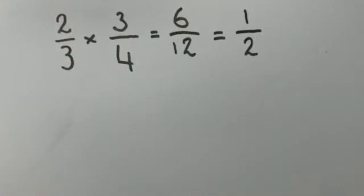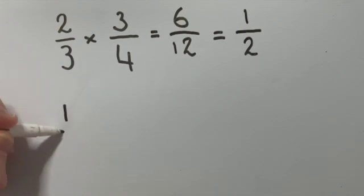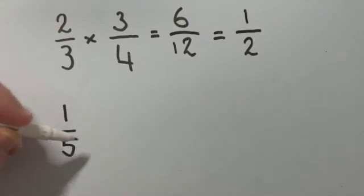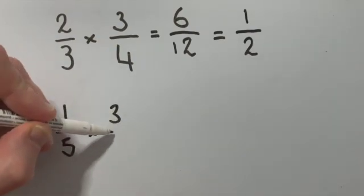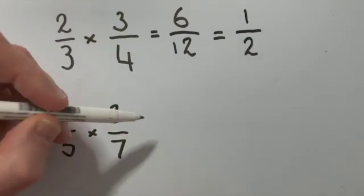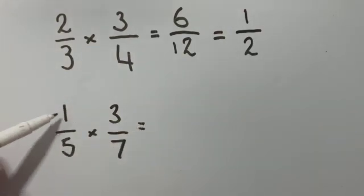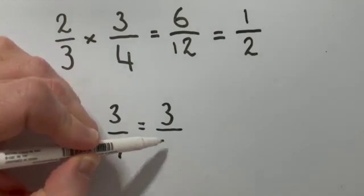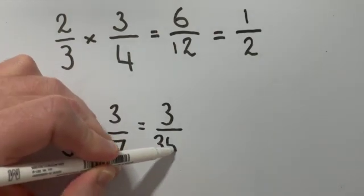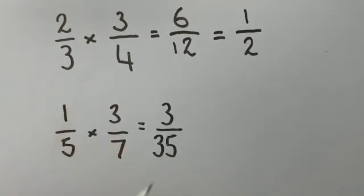Let's try one more just to make sure we know what to do. So we're going to have 1 fifth multiplied by 3 over 7. Okay, 1 times 3 is 3 and 5 times 7 is 35. We can't simplify this answer. So that's our final answer, 3 over 35.